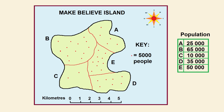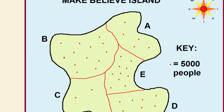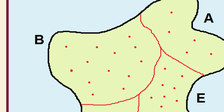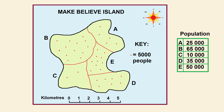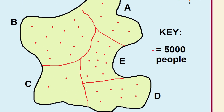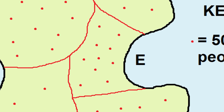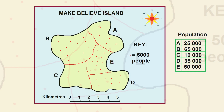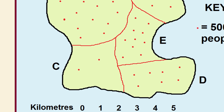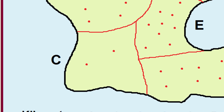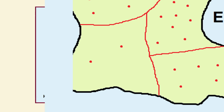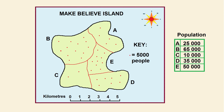Now as you can see, region B has the largest total population but it is not the most densely populated due to its large territory. Region E has slightly less people but it is much more densely populated. Region C has the fewest people and is also the most sparsely populated. Here is our completed dot distribution map.